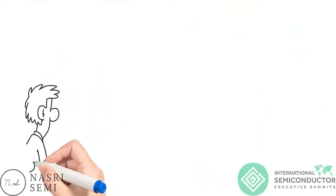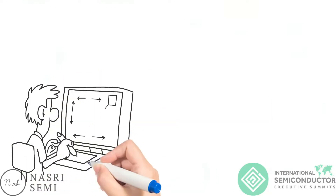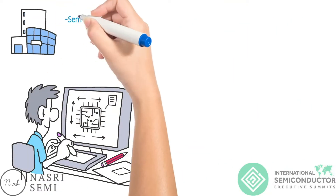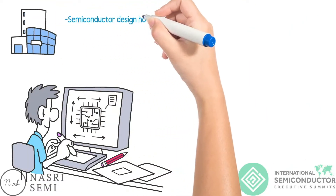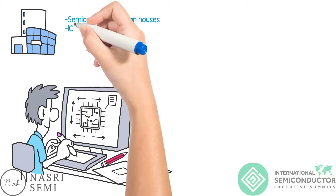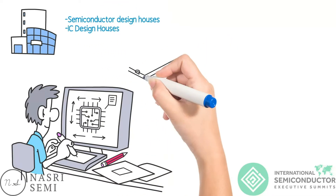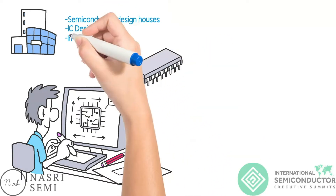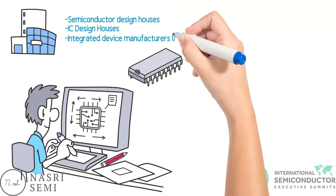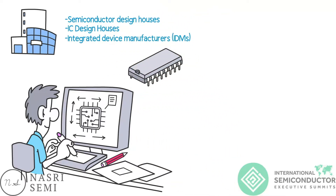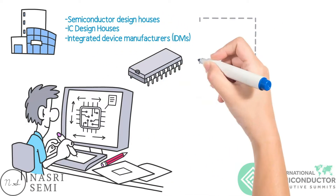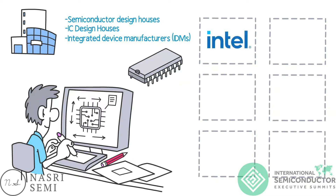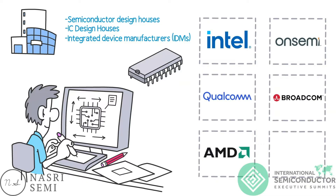The design of a semiconductor is done by companies called Semiconductor Design Houses, otherwise known as IC Design Houses, or Fabless Companies, or also Integrated Device Manufacturers, otherwise known as IDMs. These are companies like Intel, OnSemi, Qualcomm, Broadcom, AMD, NVIDIA and many more.